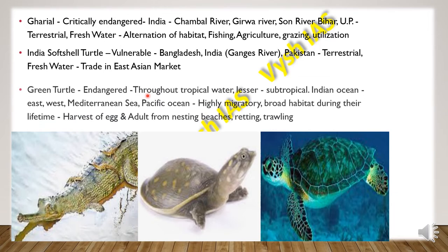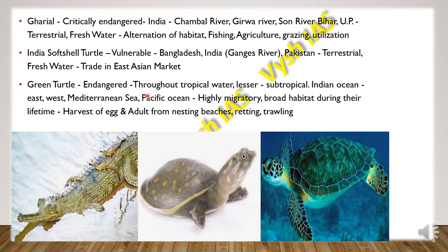Then we have the Green Turtle, which is endangered. It is found throughout tropical waters and in lesser numbers in subtropical regions — in the Indian Ocean, East, West and Mediterranean Sea, and Pacific Ocean. They are highly migratory and have a broad habitat during their lifetime. The main threats are harvesting of eggs and adults from nesting beaches, netting and trawling.